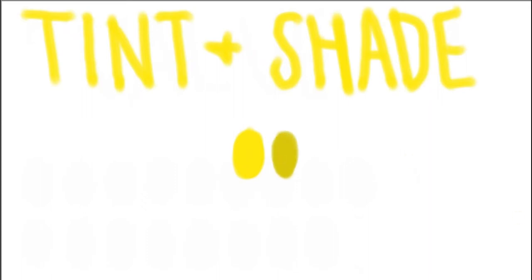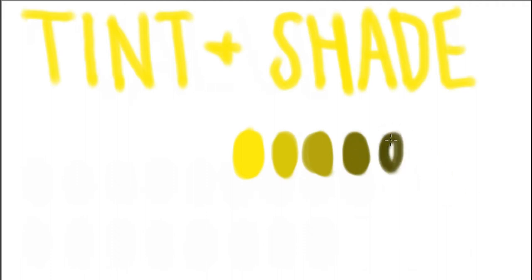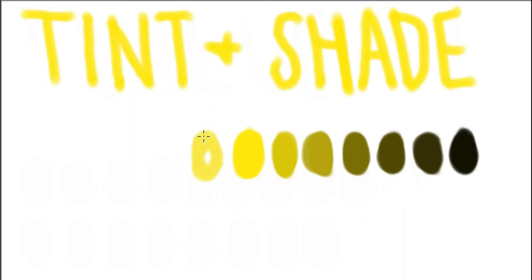Now we're going to talk about lightness, also known as tint and shade. If you want to make a color light you add white; if you want to make a color darker you add black. As you can see, on the right it's going from yellow all the way to black, and on the left it's going from yellow all the way to white.